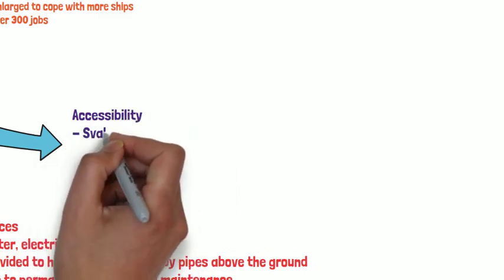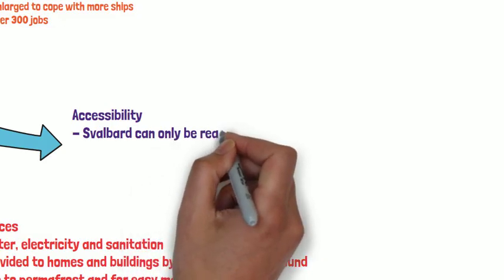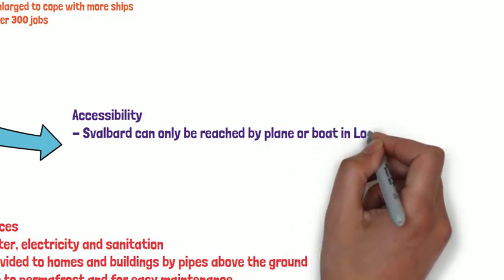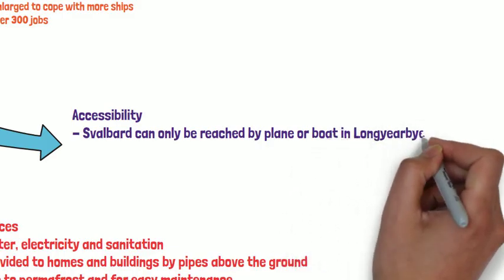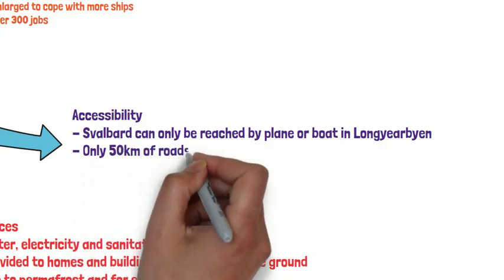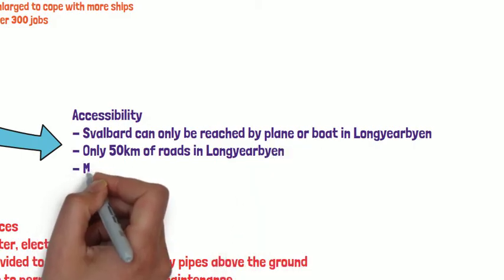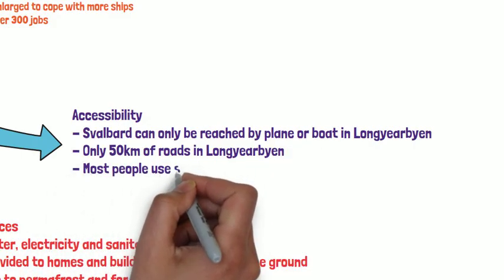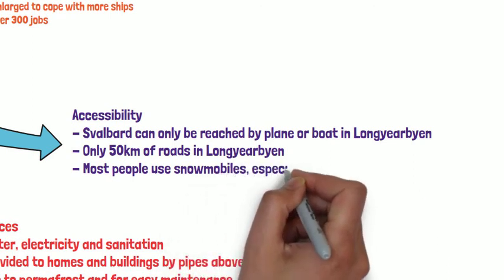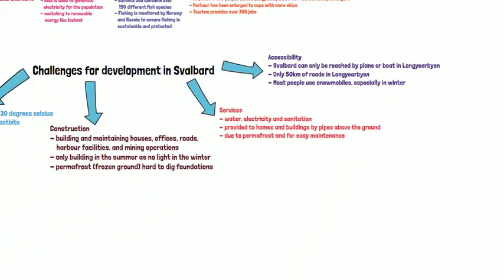Our last challenge is accessibility. Svalbard can only really be reached by plane or by boat. There are only 50 kilometres of properly built roads, mainly around the main town of Longyearbyen. Most people use snowmobiles to get around, as that's the easiest method, especially in the winter months.